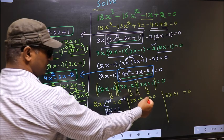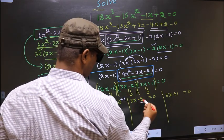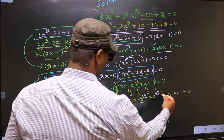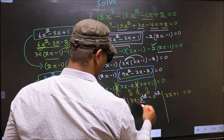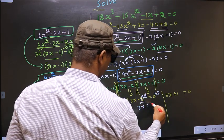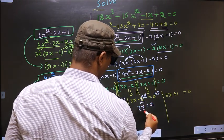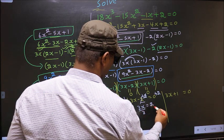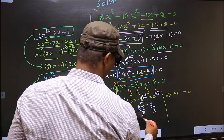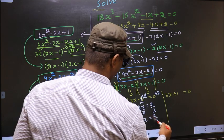Now here I should remove minus 2, for that you add 2. So this cancels out, you get 3x equal to 2. Now you should remove 3, so you divide by 3. You get x equal to 2 by 3.